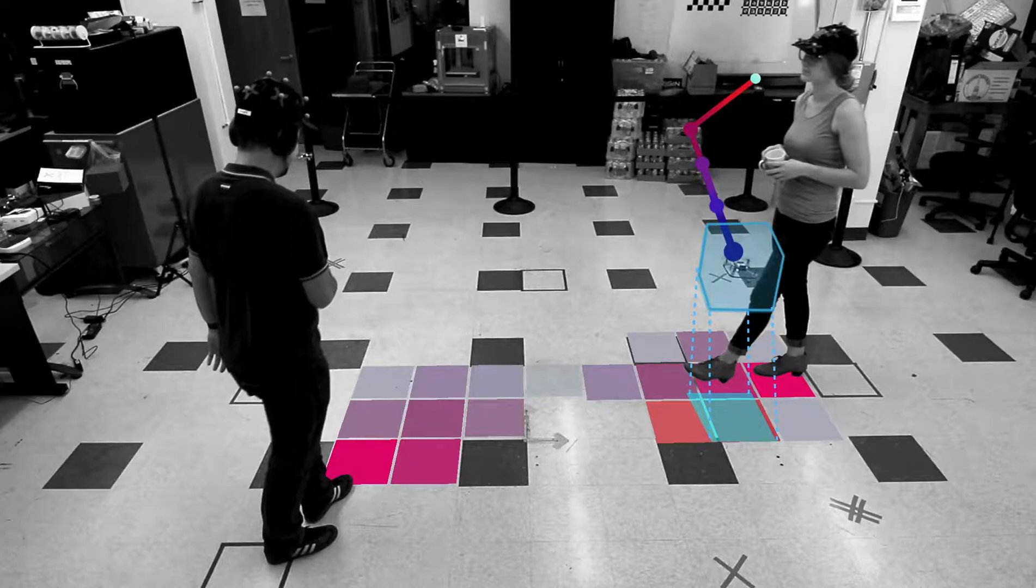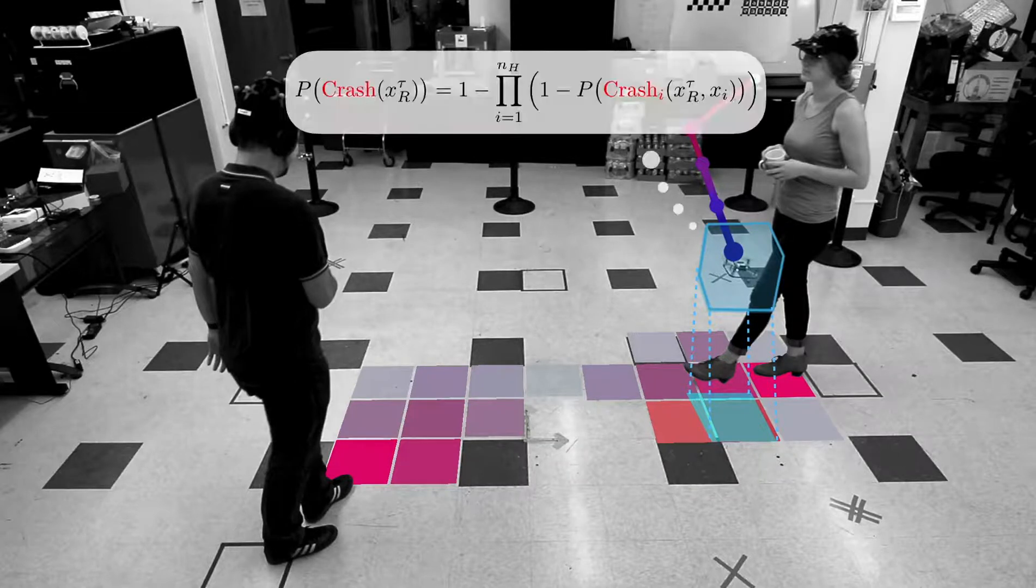The uncertainty in our prediction naturally increases near regions of interaction that would not be captured by a confidence-unaware marginal. This means we can approximate the overall collision probability with an independence assumption.